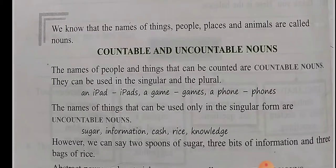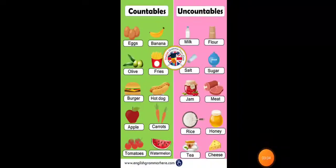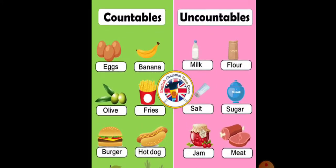Let me show you one picture. Here you can see the countable nouns and uncountable nouns. Eggs — countable nouns. Banana — countable. With the milk and flour — uncountable.